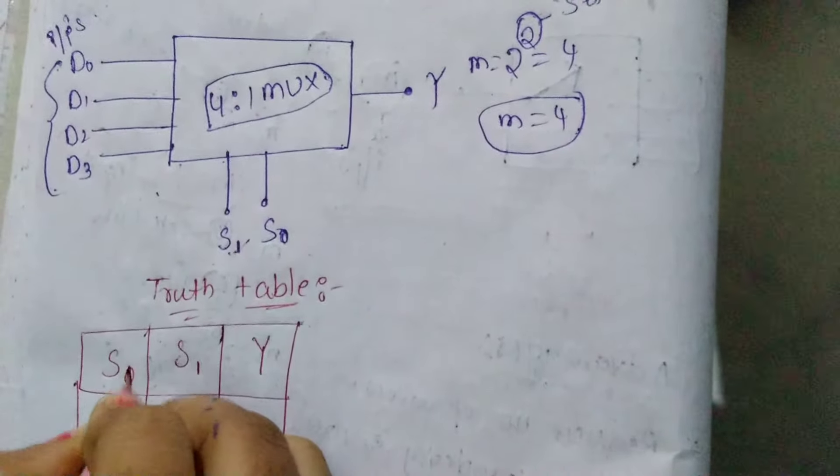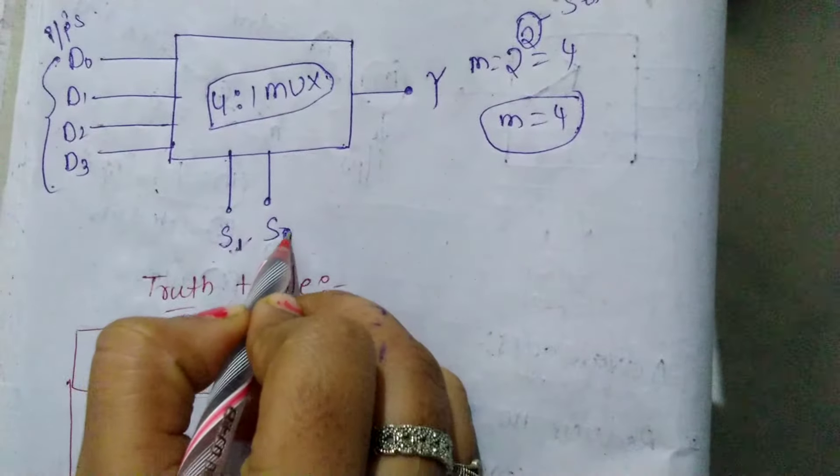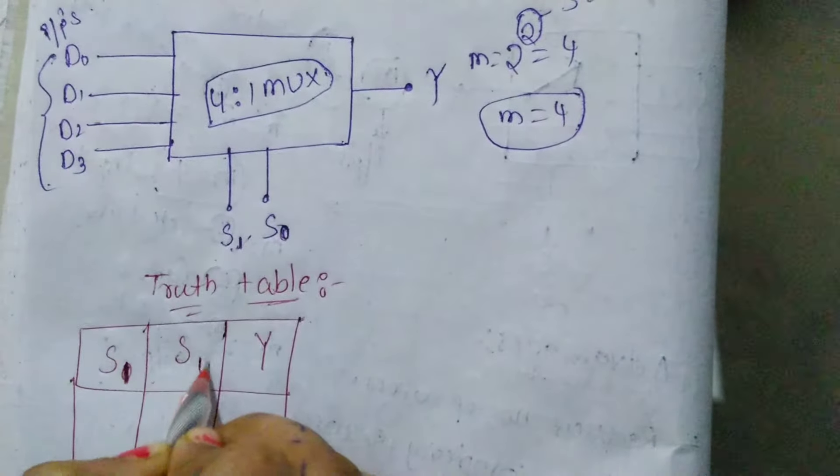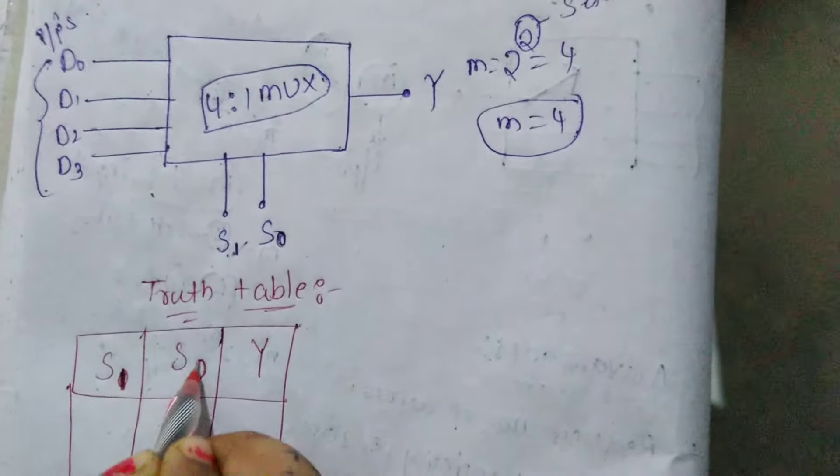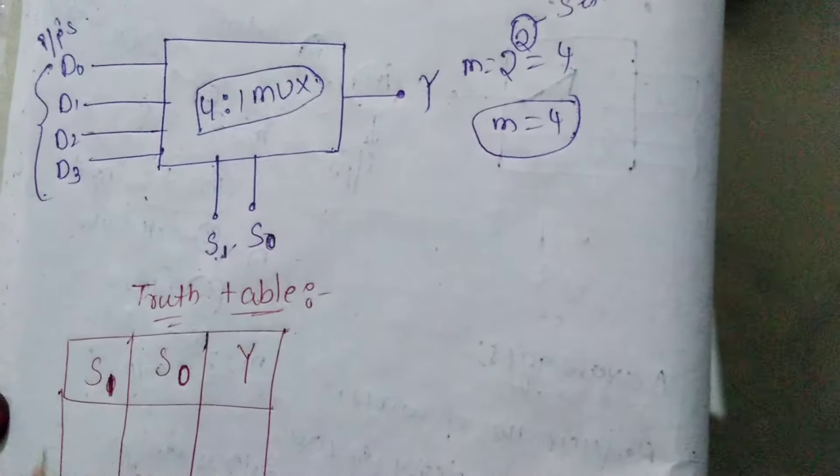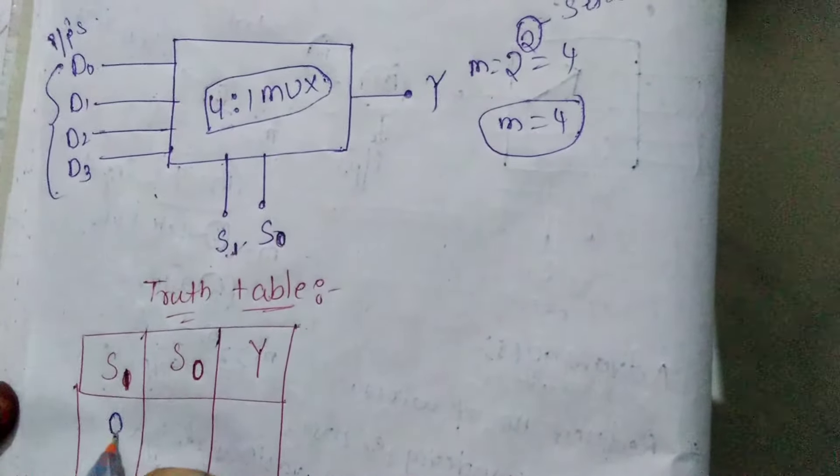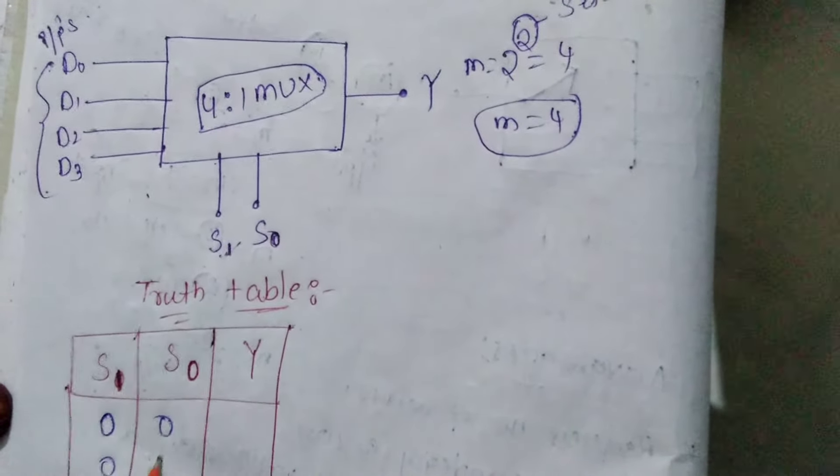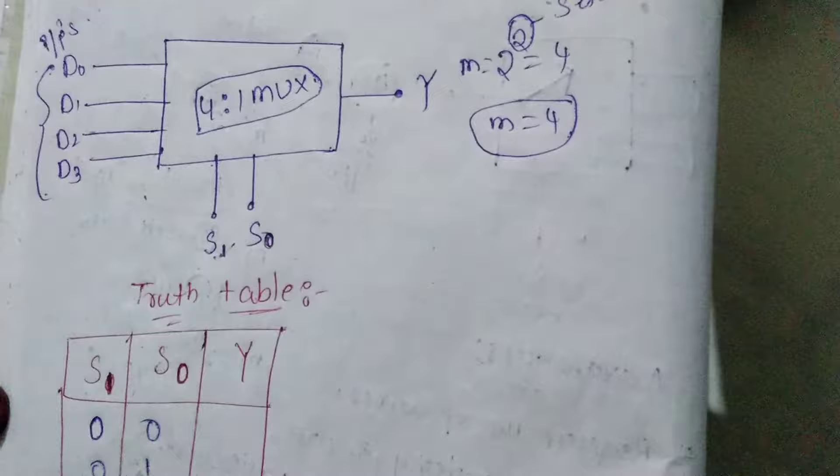Let's write this: S1 and S0. We have 2 select lines, so the number of possibilities is 4. The possibilities are 00, 01, 10, and 11.